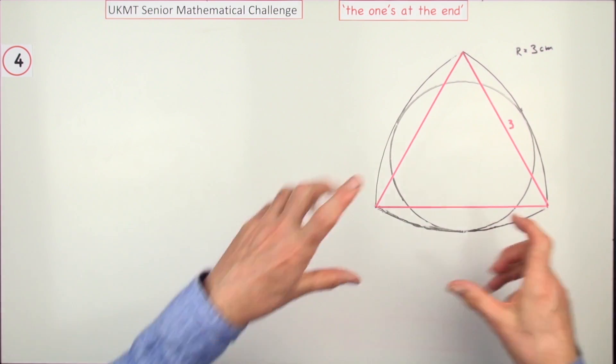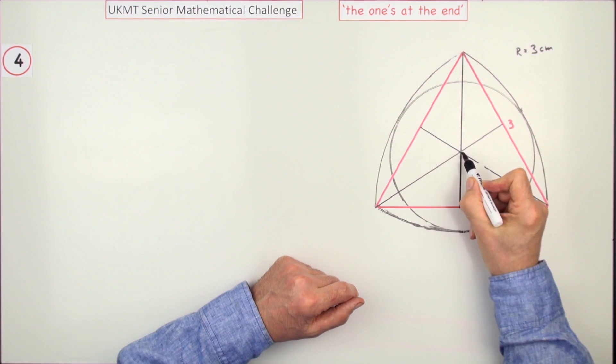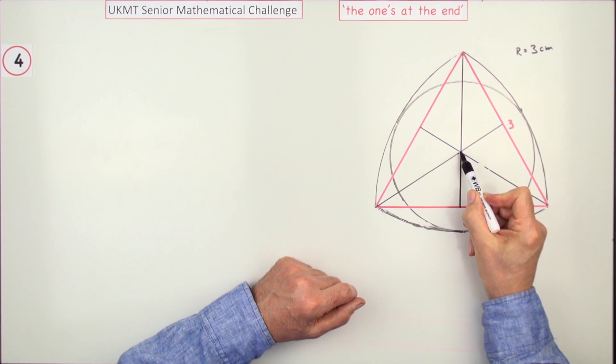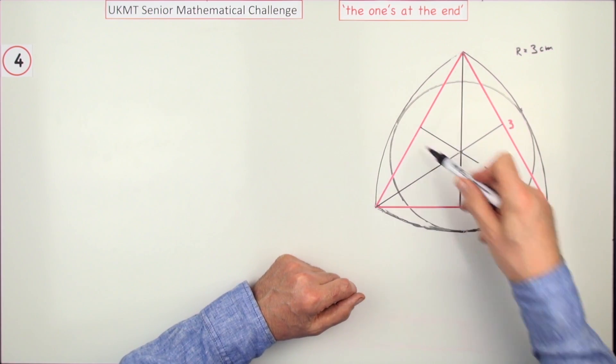It's got the rotational symmetry of order three and it's got these three axes of symmetry. If you should draw them in like that, then obviously the center of the circle must be at the intersection of the axes of symmetry since the whole figure is symmetrical.